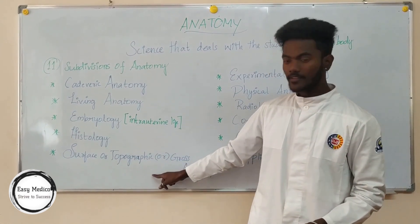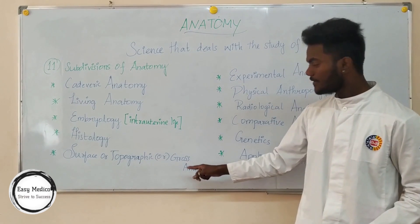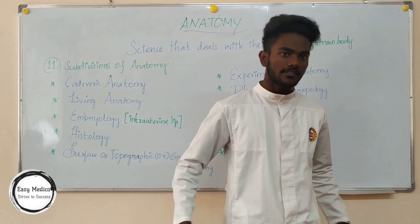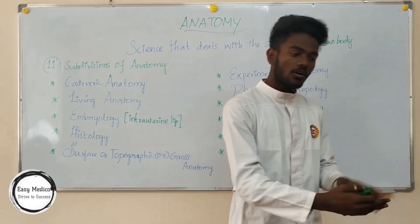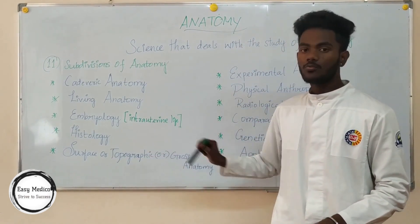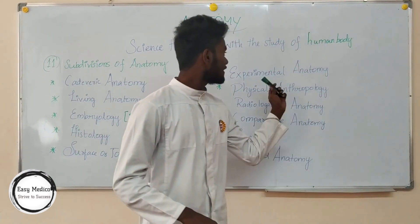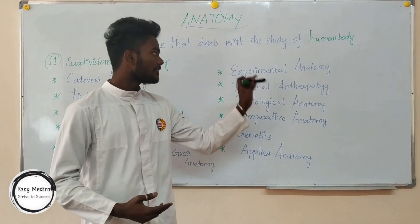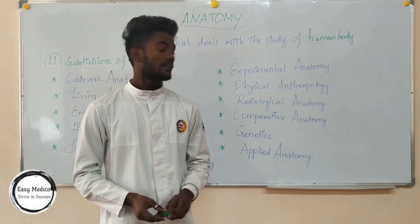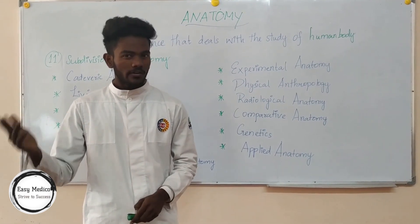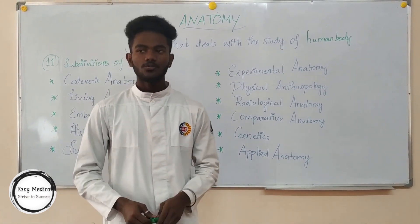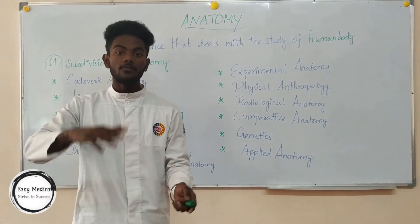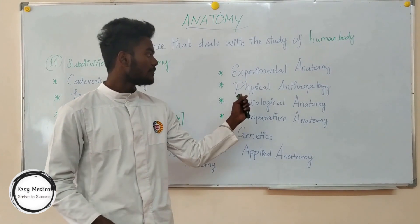Next is surface and topographic anatomy — we identify the organs on the surface of the body using topographic anatomy. Next, experimental anatomy — we learn about organs through experimental anatomy. Then, physical anthropology — we compare human beings with other sciences and study the human body. We are learning physical anthropology of the human world.